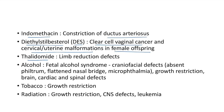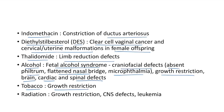Alcohol causes fetal alcohol syndrome, which includes craniofacial defects like absent philtrum, flattened nasal bridge, and microphthalmia, as well as growth restriction, brain defects, and cardiac and spinal defects. Tobacco leads to growth restriction. Exposure to radiation can lead to growth restriction, CNS defects, and leukemia.